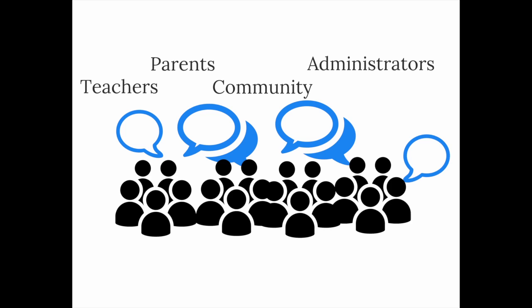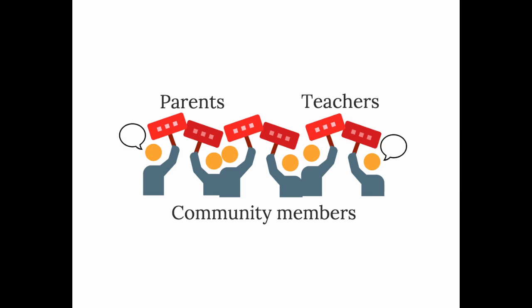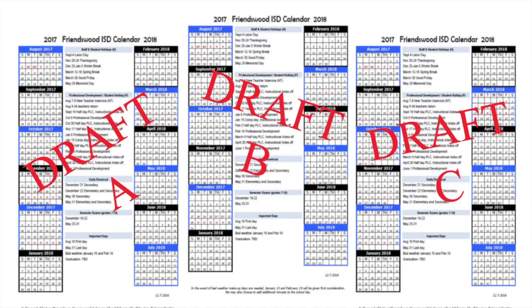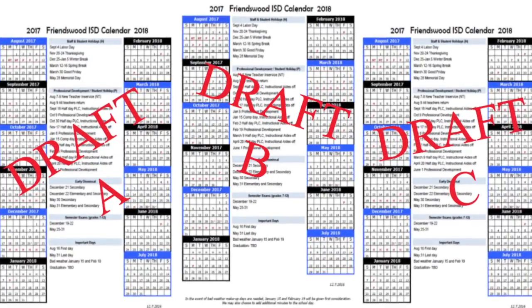One of the first tasks the DOI committee considered was the 2017-18 instructional calendar. They started by listening to the needs of parents, teachers, and community members, knowing that a DOI designation lifted the uniform date requirement that prevented school districts from beginning school before the fourth Monday in August. The only legal requirement the committee faced was that an instructional calendar must include at least 75,600 school minutes a year. Based on feedback from committee members, drafts were prepared that addressed all concerns and met the annual minute requirements.